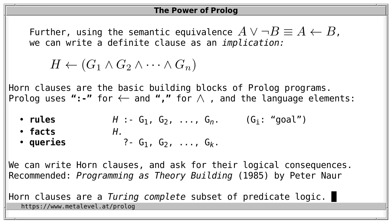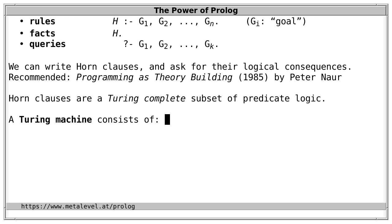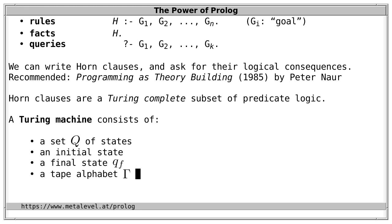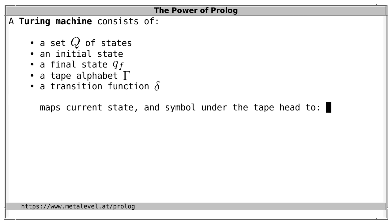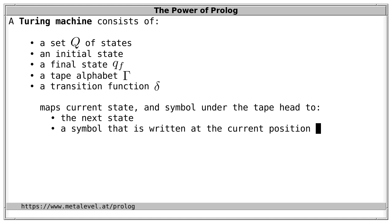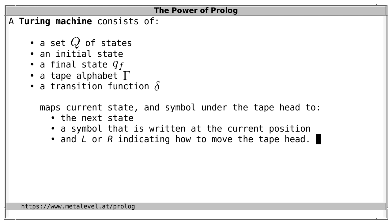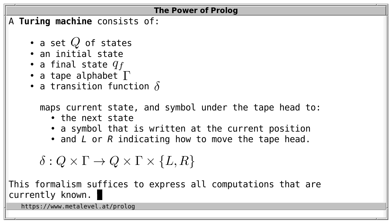Let's show Turing completeness of Horn clauses by describing a Turing machine with Horn clauses. A Turing machine consists of a set Q of states, an initial state, a final state QF, a tape alphabet gamma, and a transition function delta — a mapping from the current state and the symbol under the tape head to the next state, a symbol written at the current position, and L or R indicating how to move the tape head. The tape extends indefinitely in both directions. So delta is a function from state and symbol to state, symbol, and L or R.